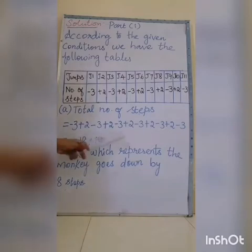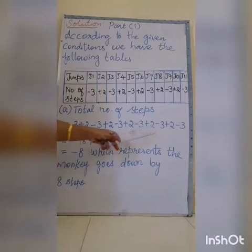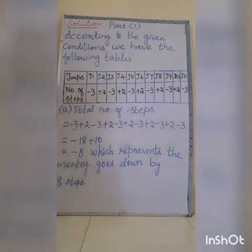So 3, 3, 3 - 6 threes are there. 3 plus 3 is 6, 6 plus 3 is 9, 9 plus 3 is 12, 12 plus 3 is 15, 15 plus 3 is 18. But put the minus sign. Minus 18.